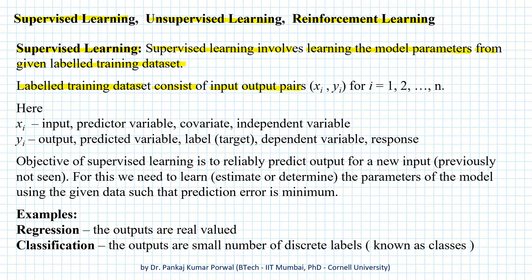The labeled training dataset is of the form (xi, yi), and let's say we have n such pairs. Here xi is called the input variable, or predictor variable, or covariate, or independent variable. And yi is called the output variable, or predicted variable, or label, or target, or dependent variable, or response, corresponding to input xi.